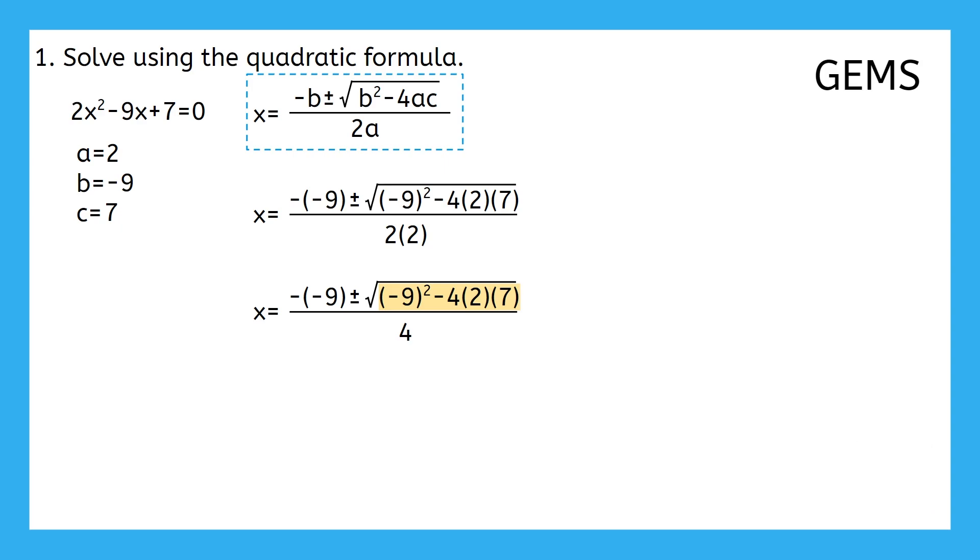Negative 9 squared is 81. Then we have negative 4 times 2, which is negative 8, and negative 8 times 7 is negative 56. Then 81 minus 56 is 25. That takes care of the groupings within the numerator grouping. And keep in mind, if you need some time to think, add to your notes, or you just want to see something again, you can always pause or rewind the video at any point.